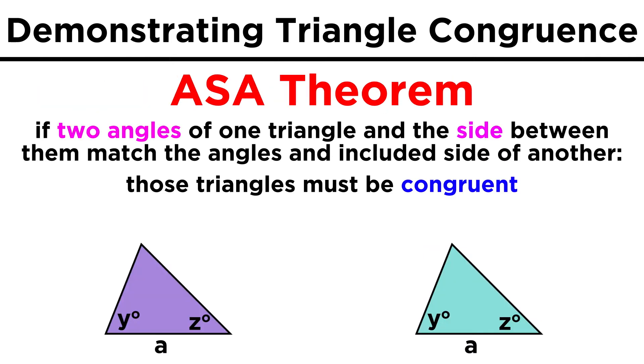There is also the angle-side-angle theorem. If there is a side of a particular length, and the other two sides that will extend from endpoints of this line segment must emerge at particular angles, then there is only one place where they could meet and finish the triangle, so any triangles with these two angles and an included side of this length must be congruent.